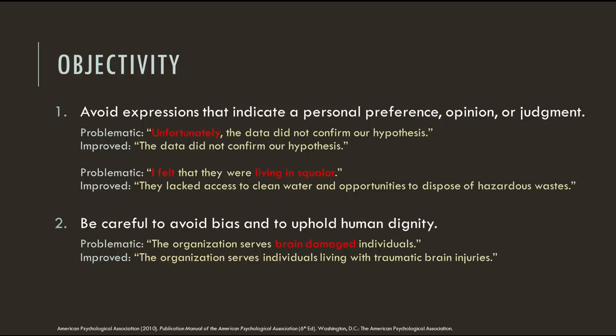Word choices can also indicate judgments or personal reactions that undermine the author's objectivity. For instance, the sentence "I felt that they were living in squalor" is problematic for two reasons. First, the author's feelings typically aren't discussed in academic writing. Secondly, the term "living in squalor" has a negative connotation and implicitly judges the people living in those conditions. A more objective version of the sentence might read: they lacked access to clean water and opportunities to dispose of hazardous wastes.